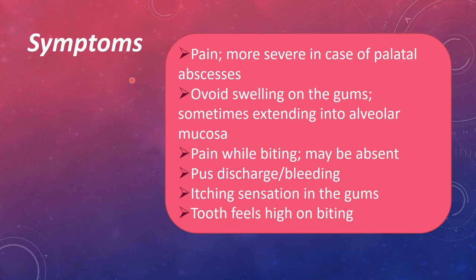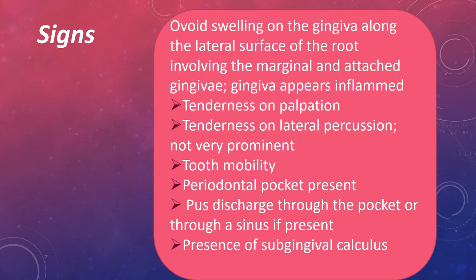The symptoms of periodontal abscess include: pain, which is more severe in the case of palatal abscesses compared to other areas; swelling on the gums, sometimes extending into the alveolar mucosa; pain while biting may be absent but pus discharge or bleeding can be seen; itching sensation in the gums; and the tooth feels high on biting. Signs include an ovoid swelling in the gingiva along the lateral surface of the root, involving the marginal and attached gingiva, which usually appears inflamed.